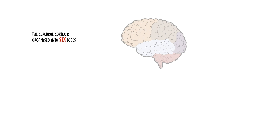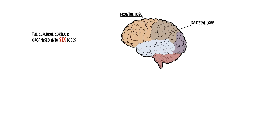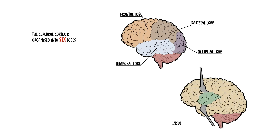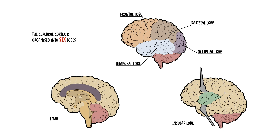The cerebral cortex is organized into six lobes: the frontal lobe, the parietal lobe, the temporal lobe, the occipital lobe, the insular lobe, and the limbic lobe. Let us talk about each of these lobes separately and look at some clinical anatomy.